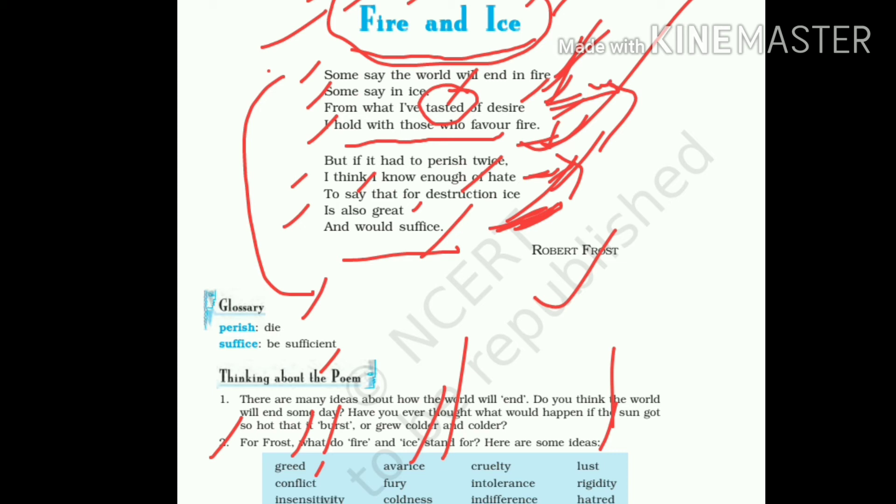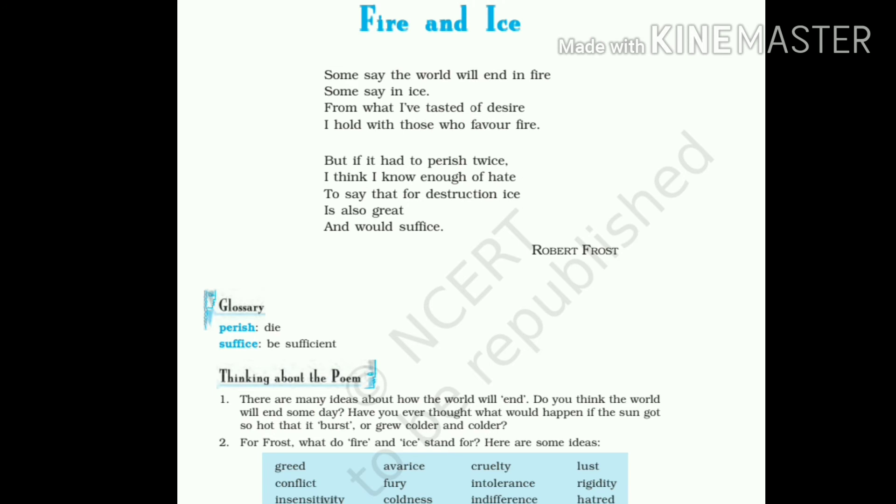Let us go to the literary devices used in the poem now. First of all, we need to see the rhyming scheme. I'll just tell you the rhyme scheme and then we will study how it is followed. The rhyme scheme is A, B, A, A, B, C, B, C, B. Let's see now.